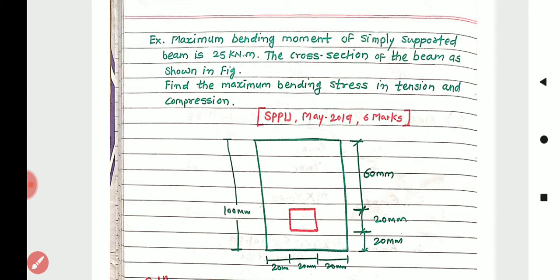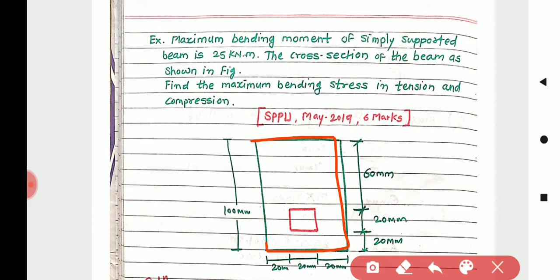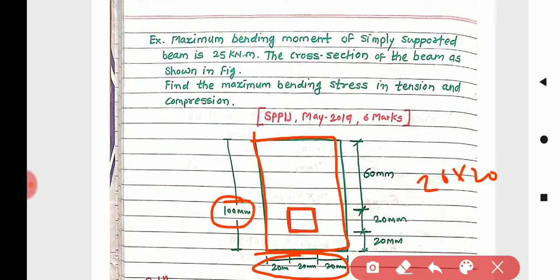The cross-section is rectangular with external dimensions 100 mm by 60 mm. Inside, there is one hollow square section having dimensions 20 mm by 20 mm.